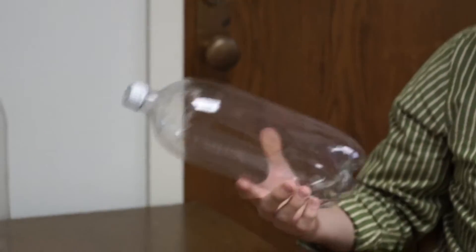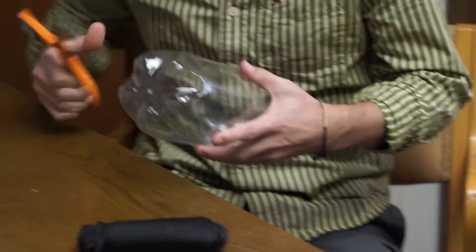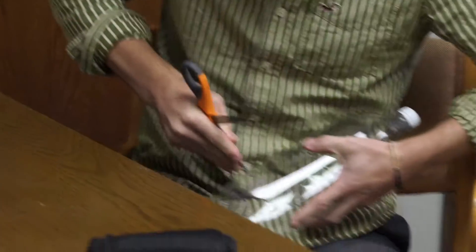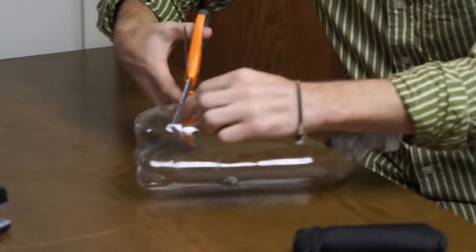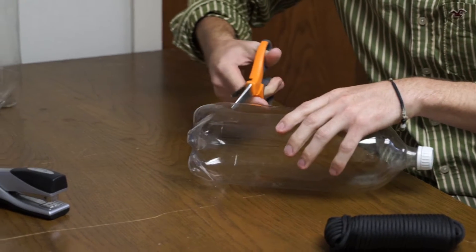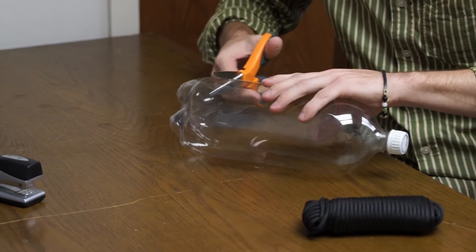So to make one trap you're gonna need two two-liter bottles. I'm gonna start by cutting the bottom off one of those bottles. There's a nice little line that you can usually follow to try to keep somewhat straight.